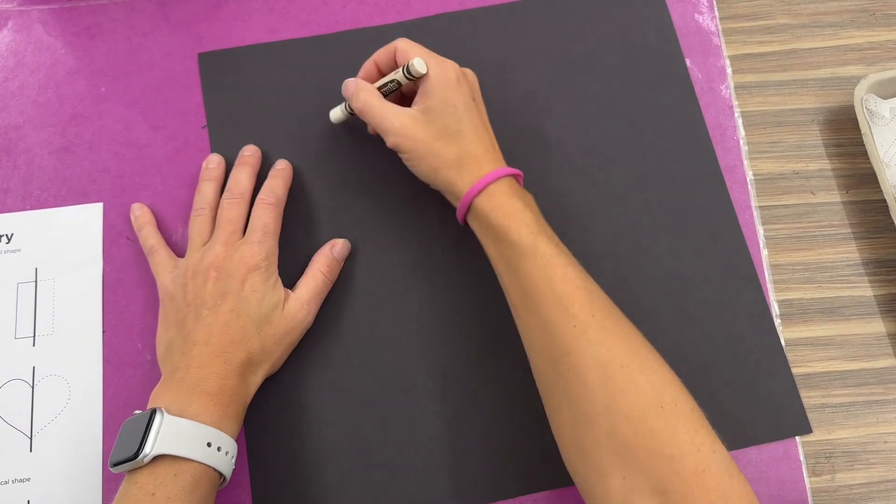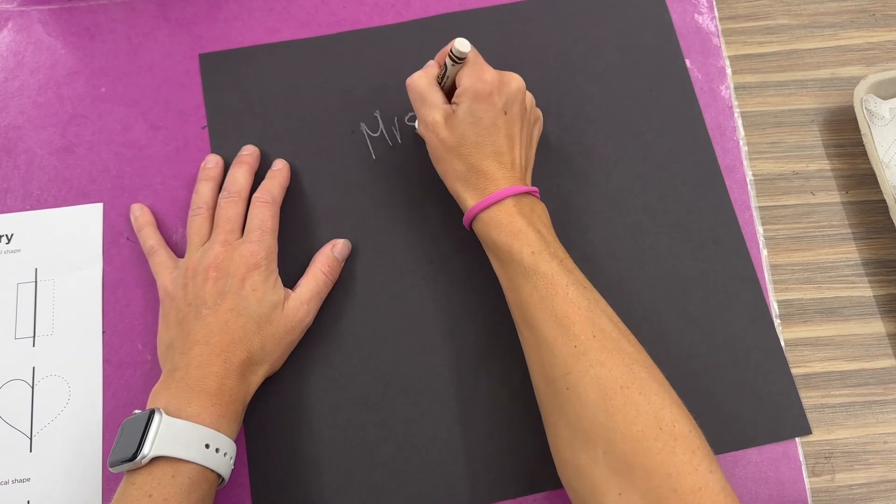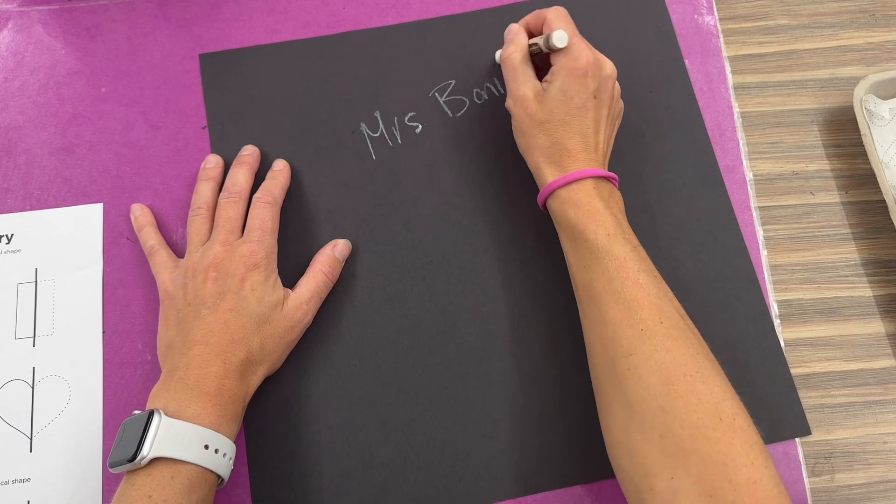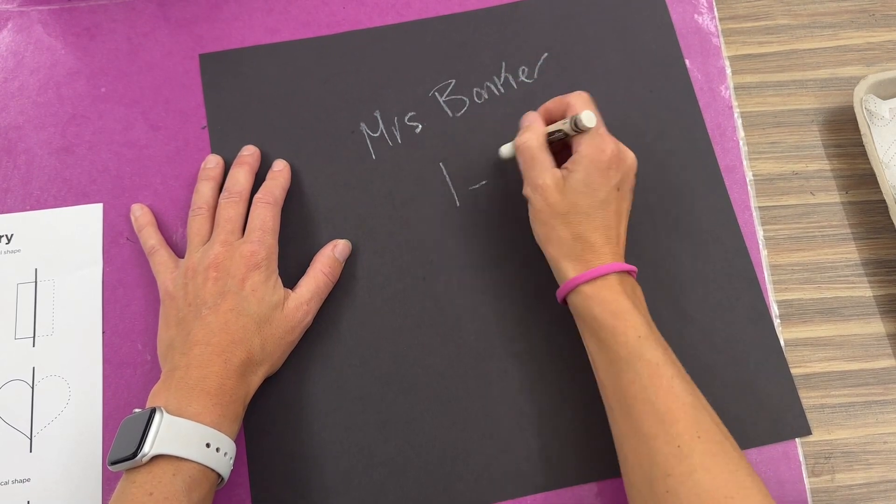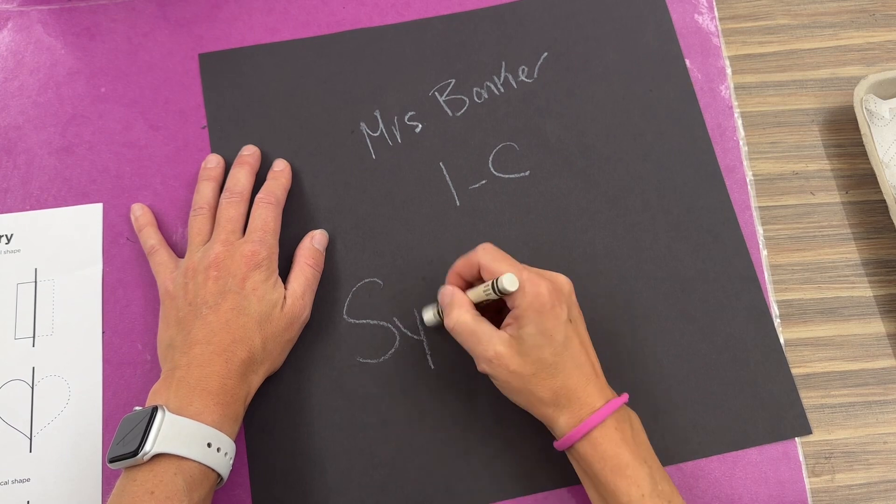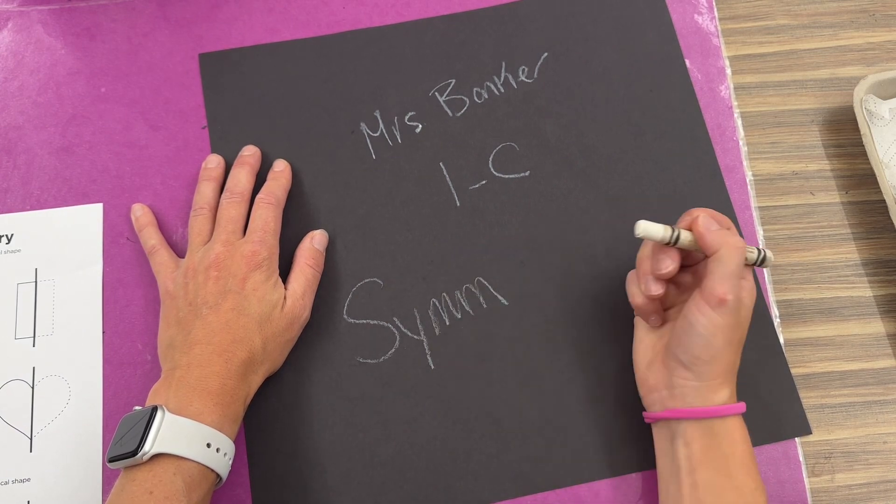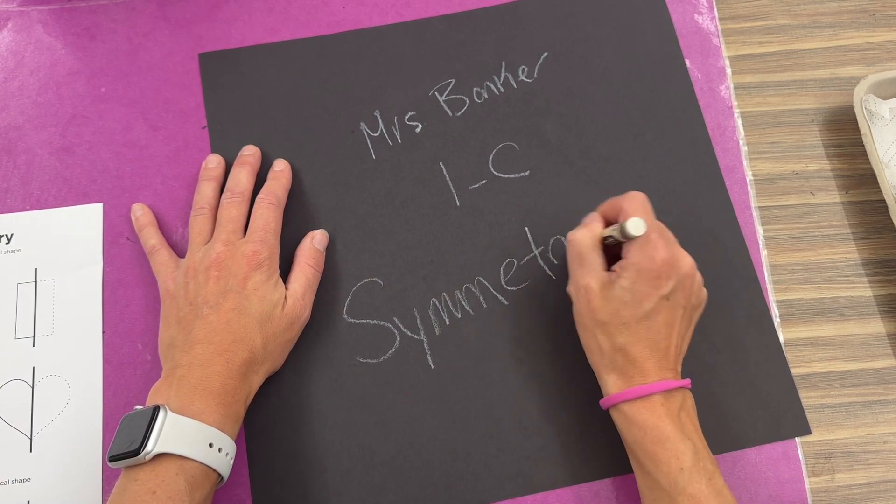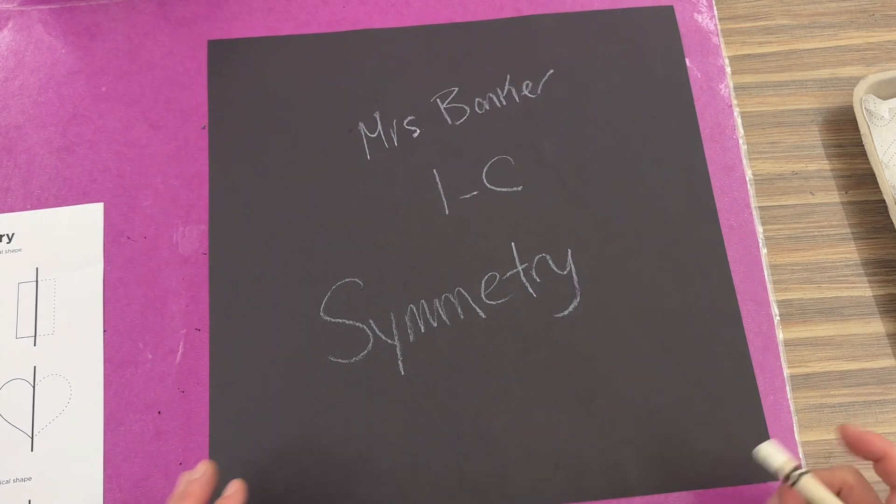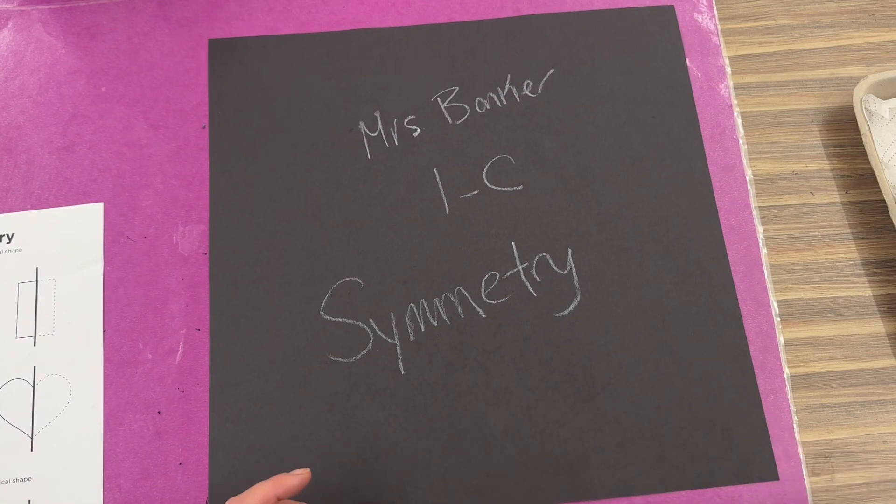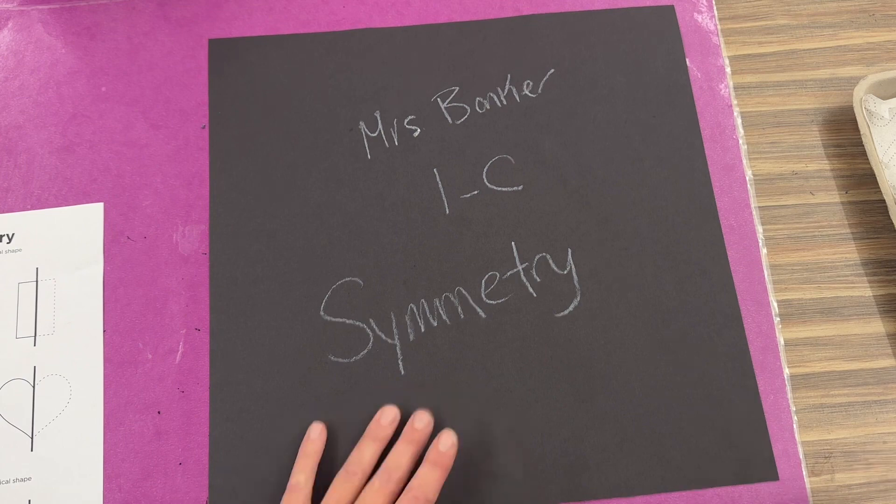Once you get your black paper you're going to write your name really big. You're going to write your art code and then you're going to write the vocabulary word for today which is symmetry. I will have that all up on the board. Then you're going to put your white crayon away because we're not going to be using this for the rest of class.